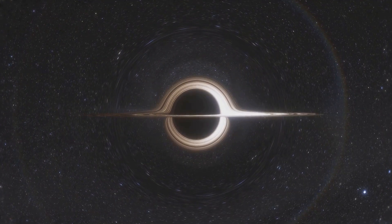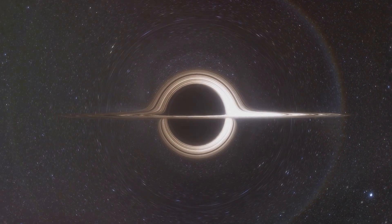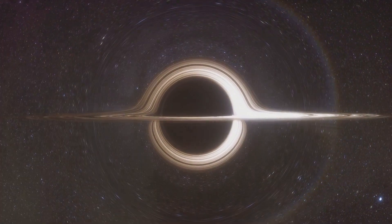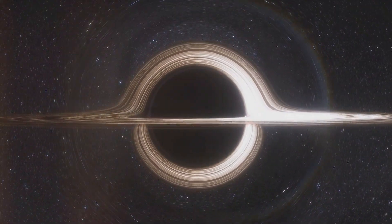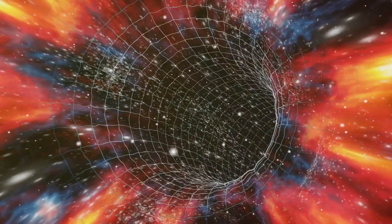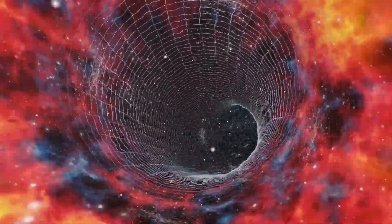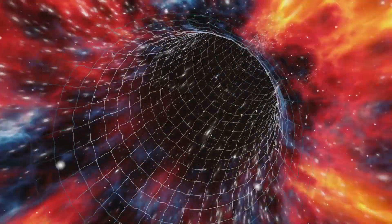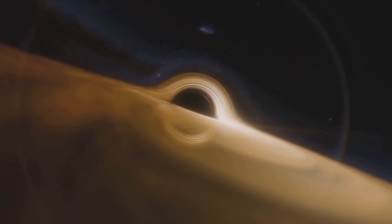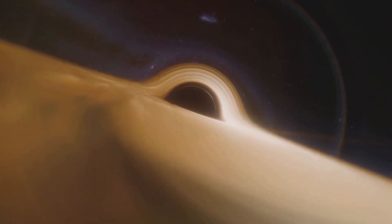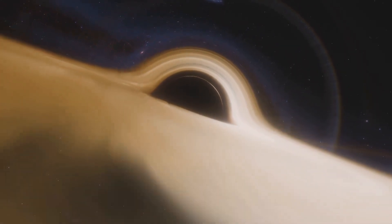Another common myth is that black holes act as cosmic vacuum cleaners pulling everything inexorably toward them. It's crucial to understand that the gravitational pull of a black hole, while immensely strong at close range, does not extend infinitely. Objects in the vicinity of a black hole must cross a specific boundary, the event horizon, to be drawn in. Outside this boundary, the gravitational effects of a black hole are similar to any other object of the same mass.